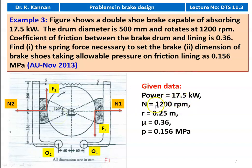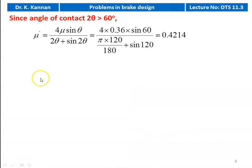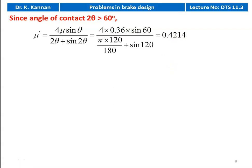The given data: Power = 17.5 kW, N = 1200 rpm, R = 0.25 meter, μ = 0.36, allowable pressure = 0.156 megapascal. Since the angle of contact 2θ is greater than 90 degrees, we calculate μ': μ' = 4μ sin θ / (2θ + sin 2θ) = 4 × 0.36 × sin 60 / (π × 120/180 + sin 120) = 0.4241. This is the corrected coefficient of friction to be used in all calculations.